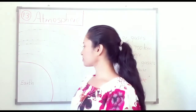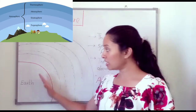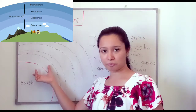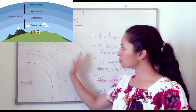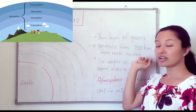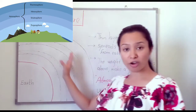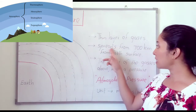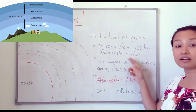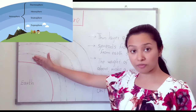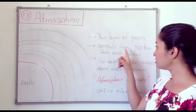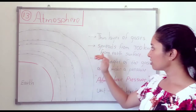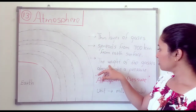We can see clouds, blue sky and stars through the atmosphere, but we cannot see the atmosphere itself. This is our earth, and we are on the earth's surface. The atmosphere is a thin layer of gases surrounding the earth, and it spreads from the earth's surface up to 700 kilometers.